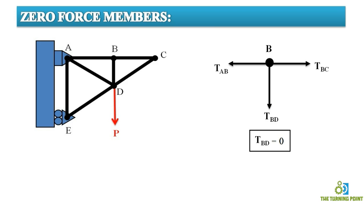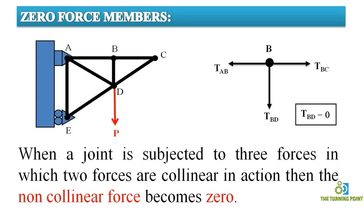This is nothing but the statement which is useful in finding zero force members. When a joint is subjected to three forces in which two forces are collinear in action, then the non-collinear force will become zero.